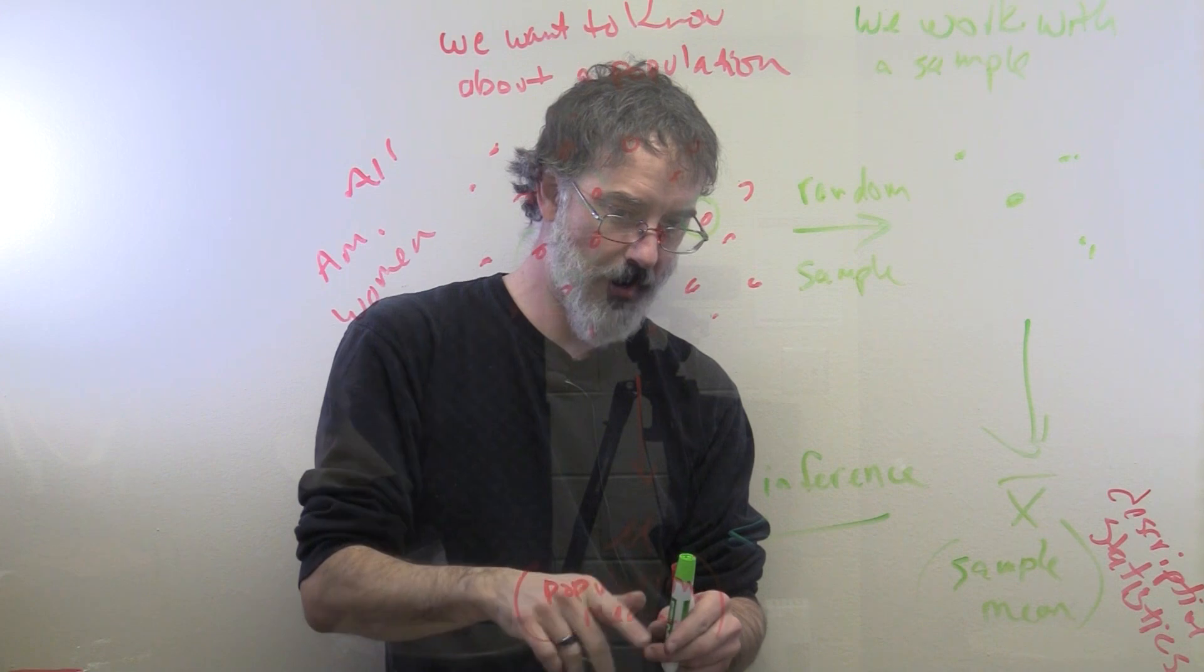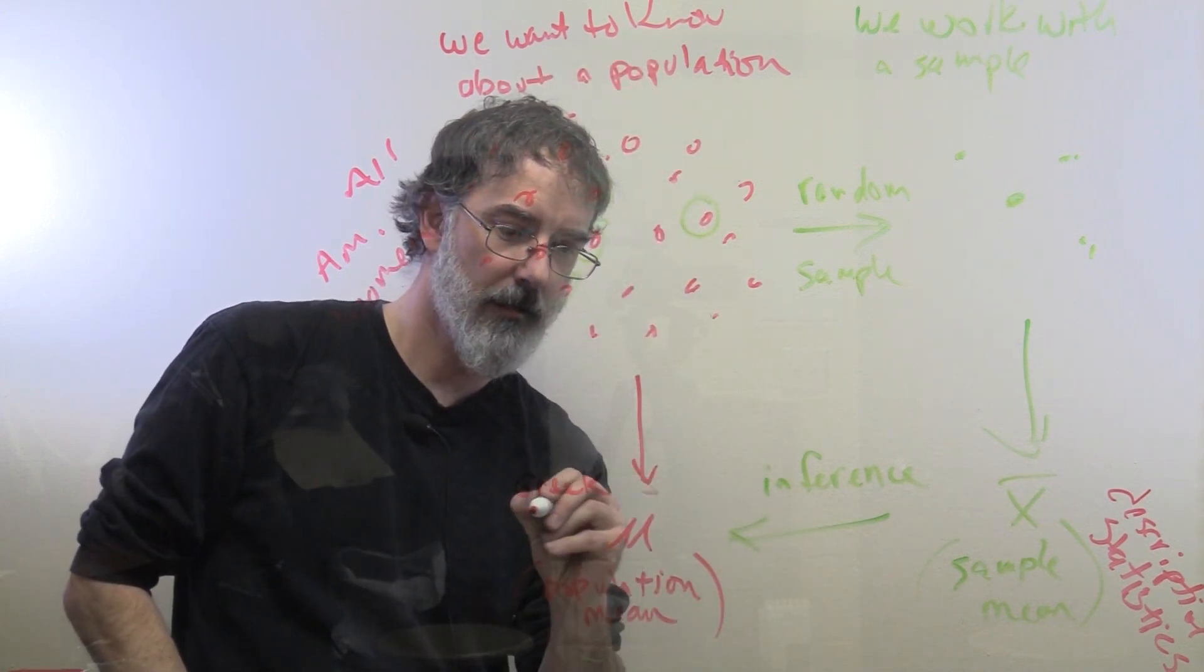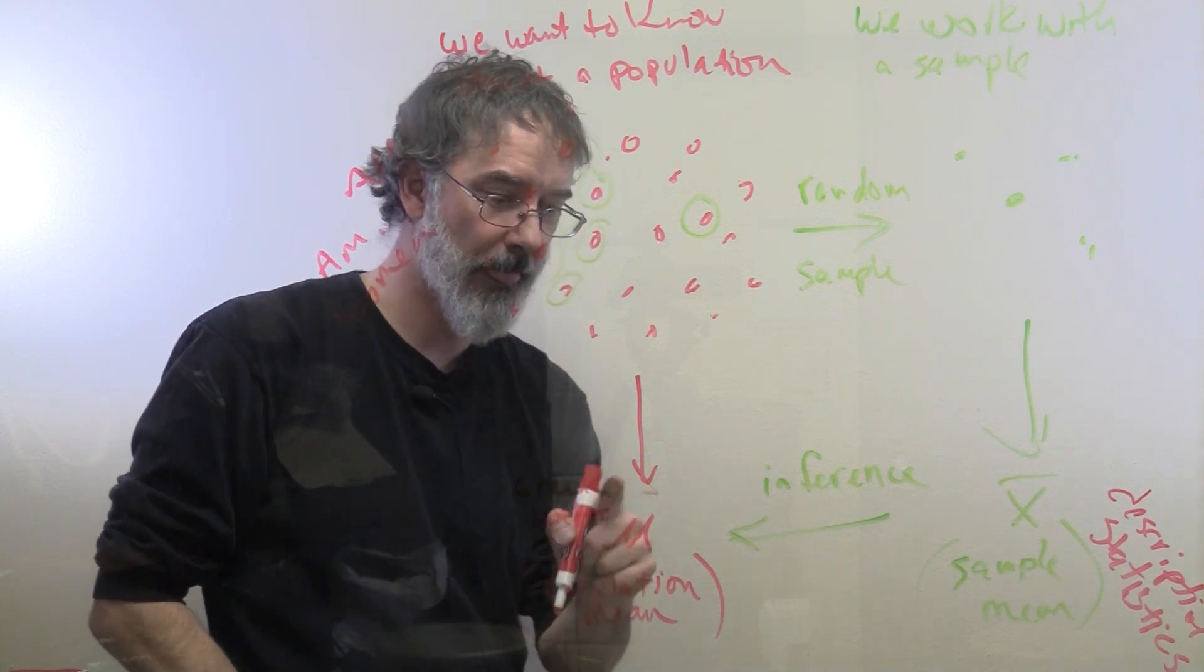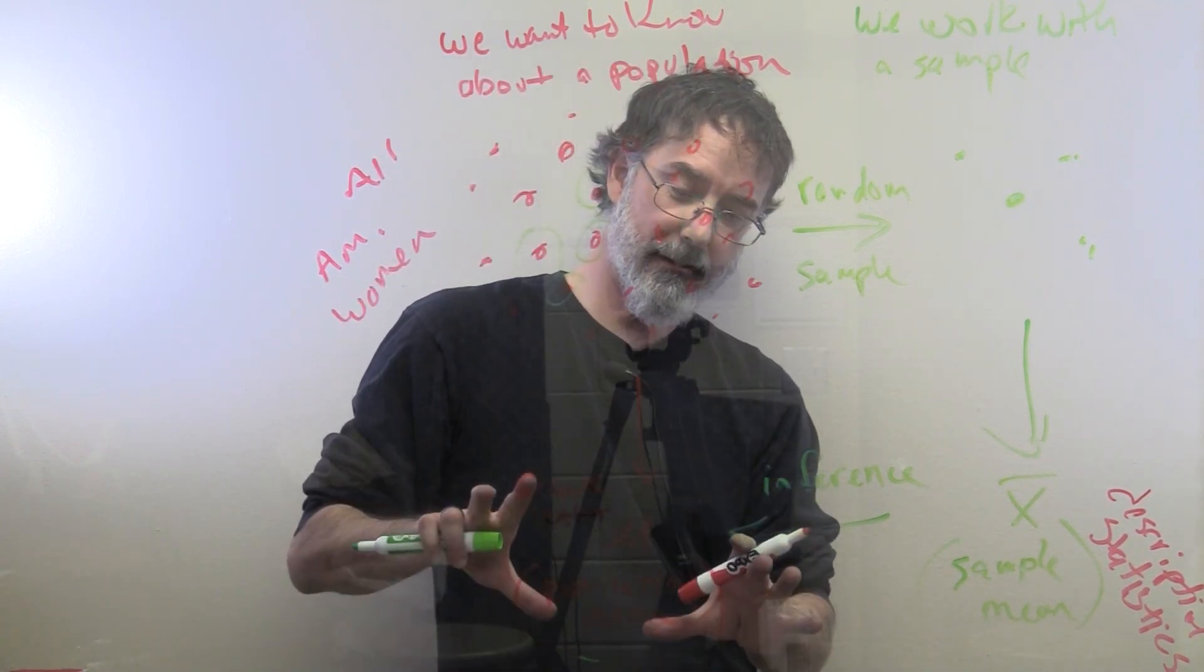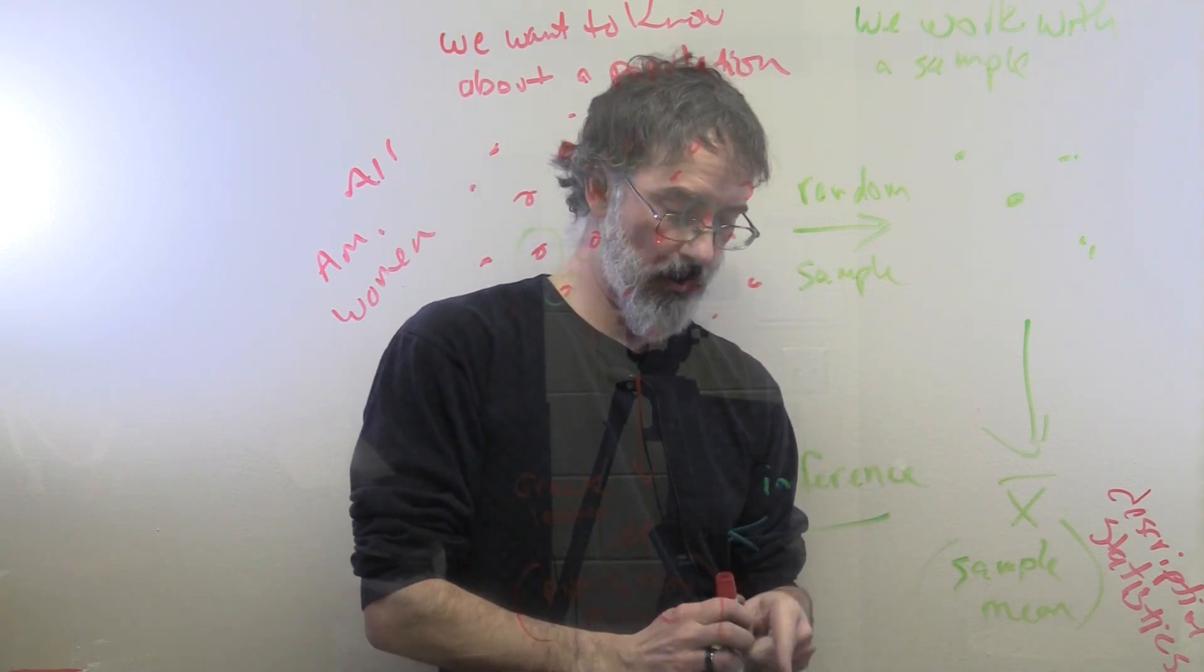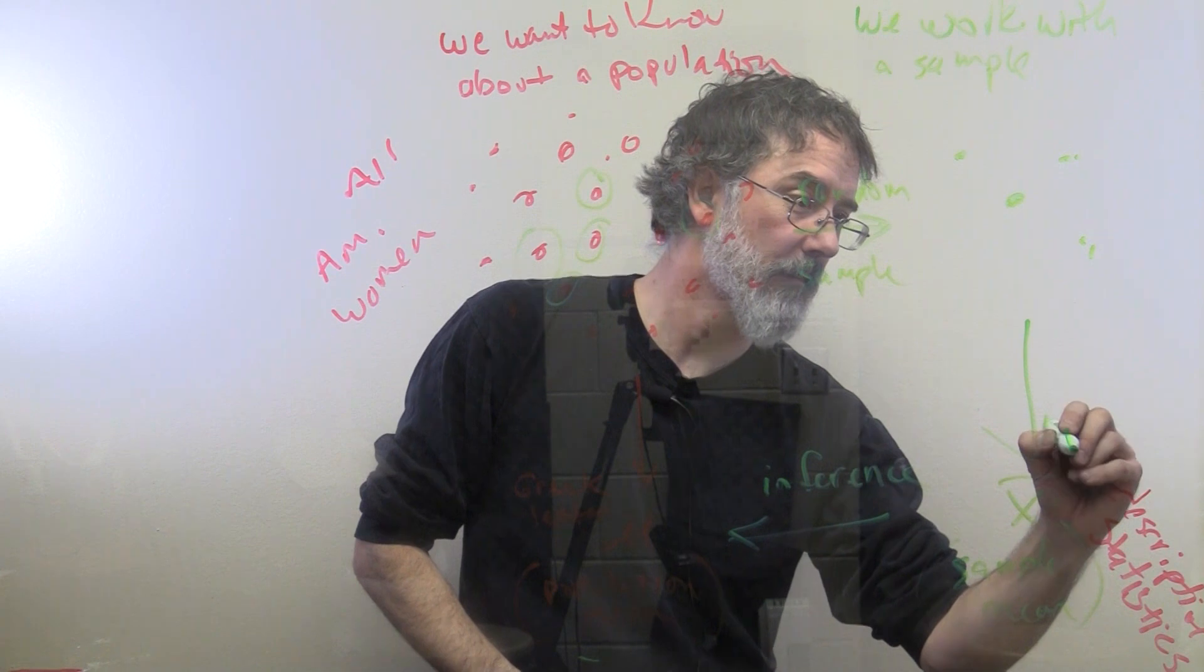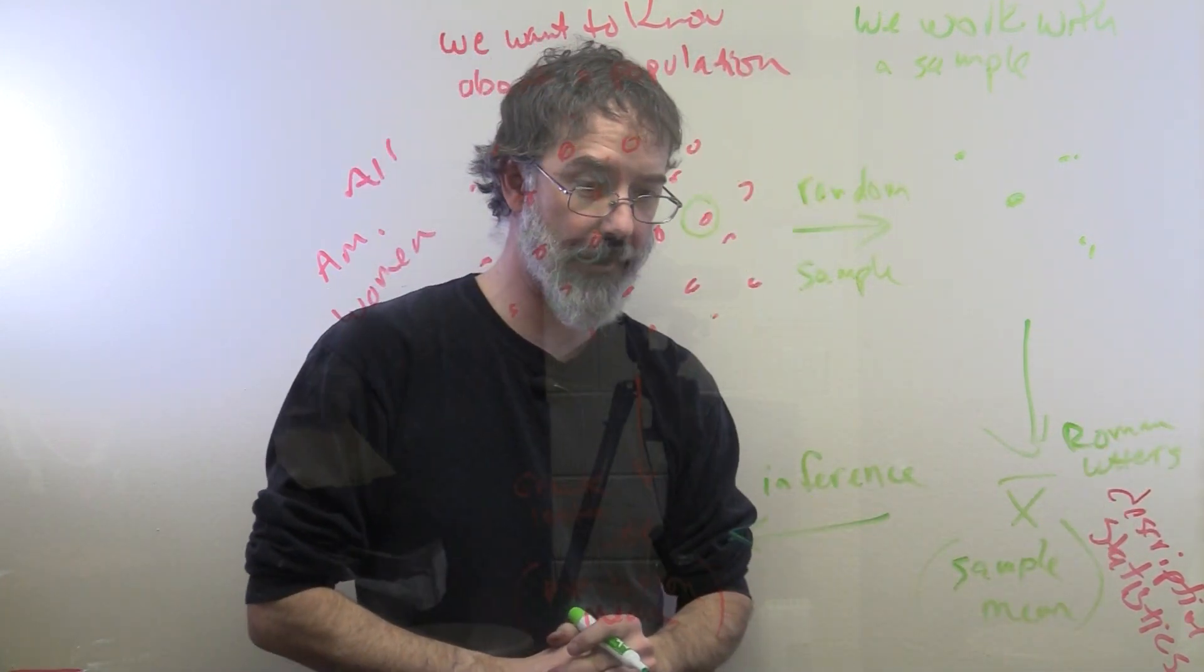And notice that the population mean, this is a Greek letter. And that is going to be commonly the case that most population statistical values like this are going to be Greek letters, descriptive statistics, and most sample statistics are going to be Roman letters, an X or something like that.